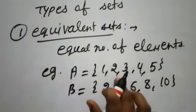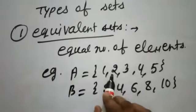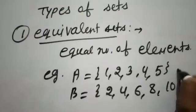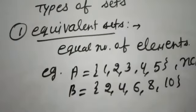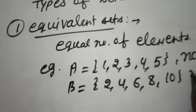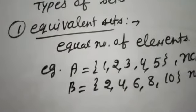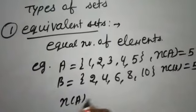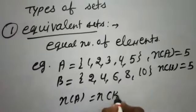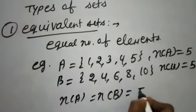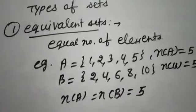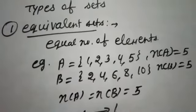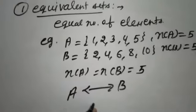When we go through set A, there are 5 elements: 1, 2, 3, 4, 5, and in set B there are also 5 elements. So, according to the definition, the number of elements in set A is equal to the number of elements in set B. So we can say set A is equivalent to set B.